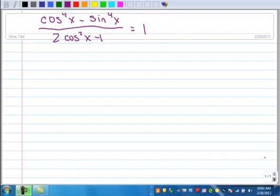All right, let's do this example here. So we have cosine x to the 4th minus sine x to the 4th all over 2 times cosine squared x minus 1, and all of that equals 1. All right, so where to begin?